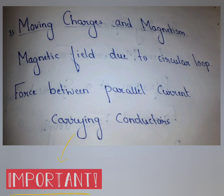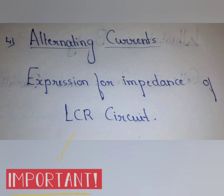From the third chapter, Moving Charges and Magnetism, the important questions are: magnetic field due to a circular loop, and force between parallel current-carrying conductors.